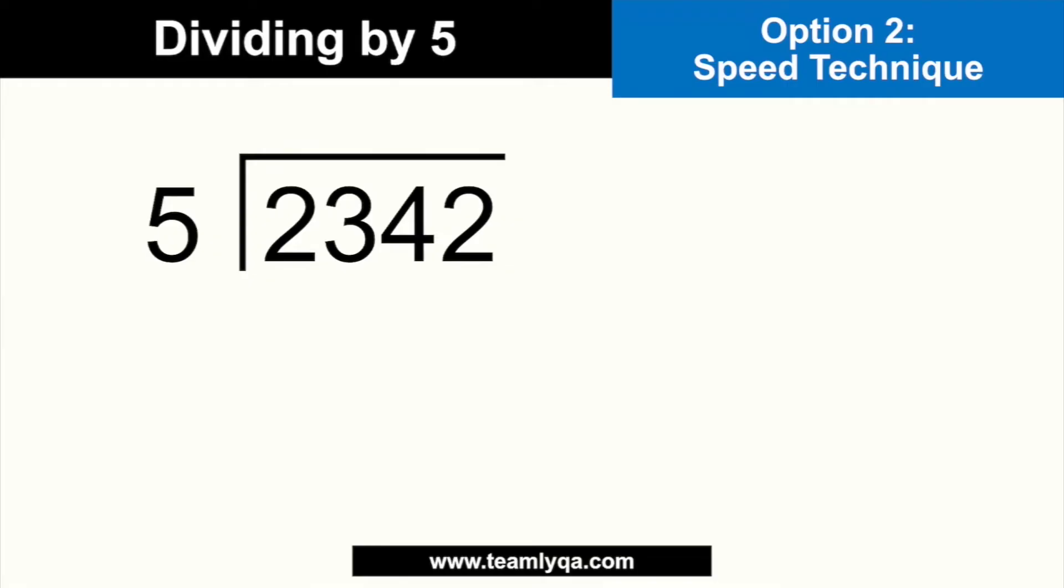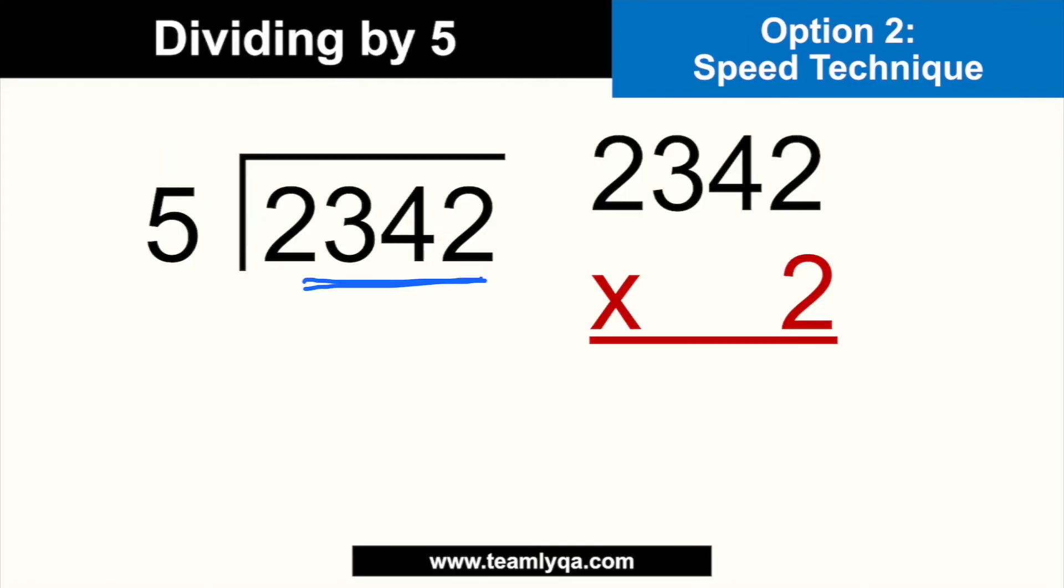Pero, paano mo siya may papalabas dito? Now, again, instead of going from left to right and solving it like that, ang first step dito sa speed technique is actually to multiply the number by 2. So, kung anuman tong number na to na gusto mong i-divide sa 5, itatimes 2 mo lang siya. Now, ano ang beauty ng times 2? Kasi any number, pwede mo i-mental na times 2. Lalo na kung comfortable ka with your digits, kung magaling ka sa chunking. Madali lang mag times 2. You start from the right. So, paano mag times 2? You start from the right side. 2 times 2 is 4. 4 times 2 is 8. 3 times 2 is 6. 2 times 2 is 4.